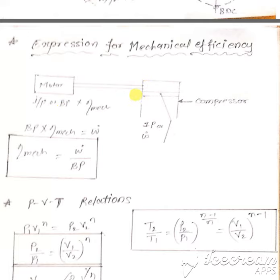Brake power times mechanical efficiency will be equal to indicated power or the input power of the compressor. Therefore, brake power times mechanical efficiency equals W dot. Therefore, mechanical efficiency equals W dot upon BP.